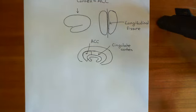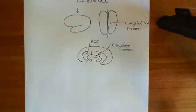That now concludes the ascending pain pathway. What we want to look at in the next video is the descending pathway for the modulation of pain, and then we'll be ready to finally discuss how opioids are going to block — or at least hugely reduce — the sensation of pain.